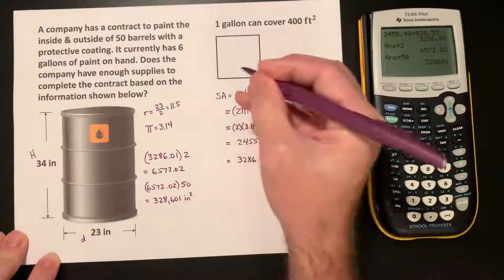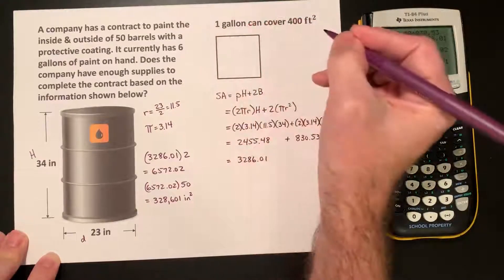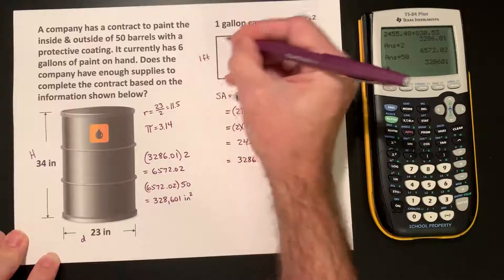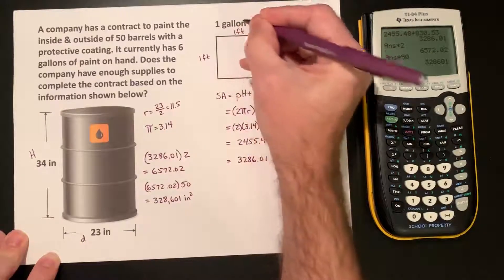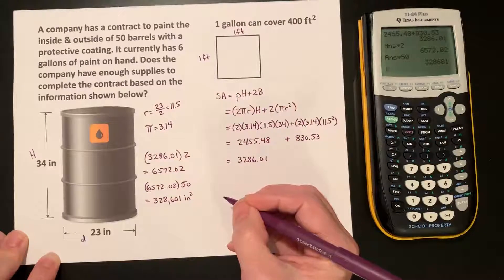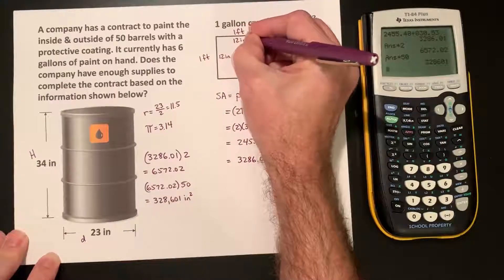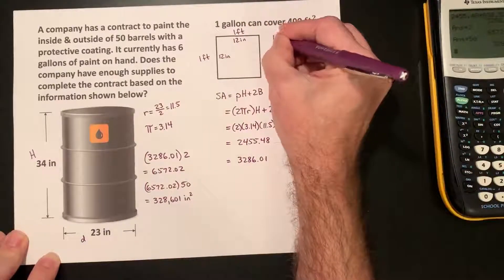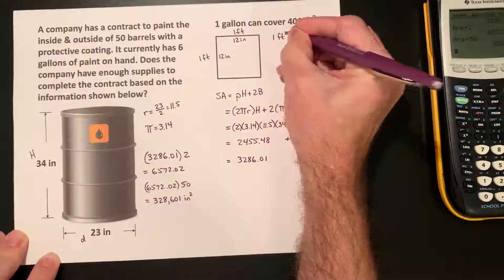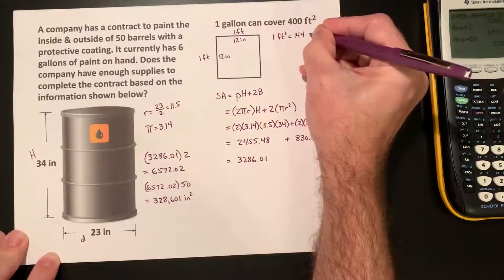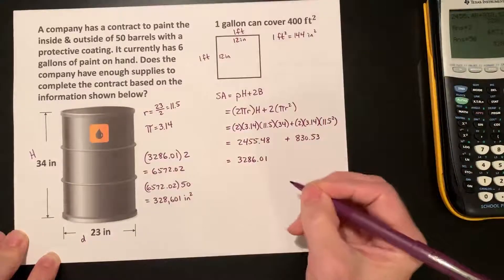Well, it's not that difficult. If we know that 1 square foot is 1 foot by 1 foot, then we can also use the other variation of that. That's 12 inches by 12 inches. So, then 1 square foot is equal to 144 square inches.